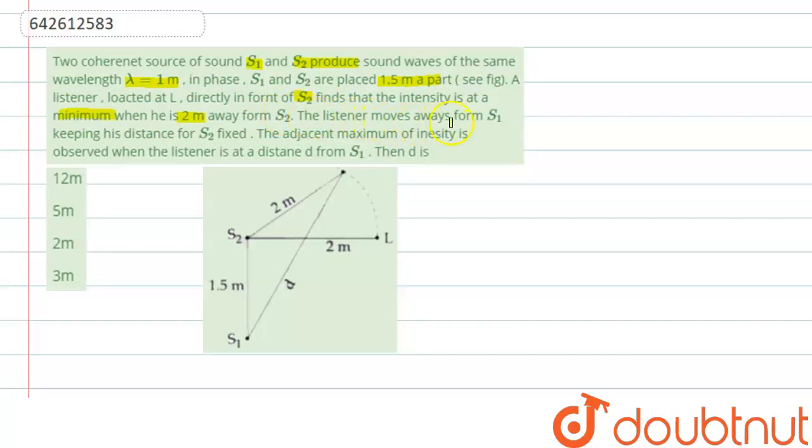The listener moves away from S1, keeping his distance from S2 fixed. The adjacent maximum of intensity is observed when the listener is at a distance D from S1. In this question, we have to find the value of D for which the listener will observe maximum intensity.